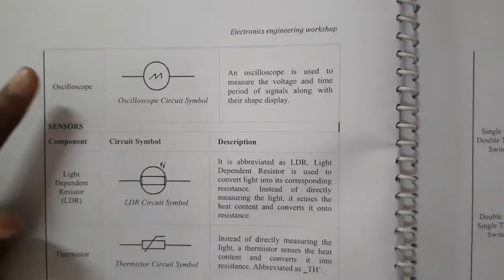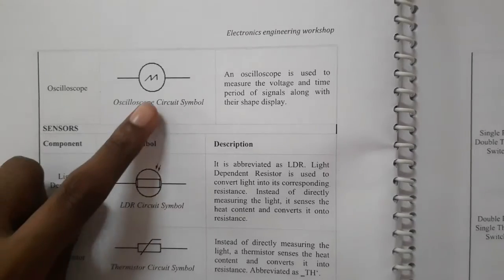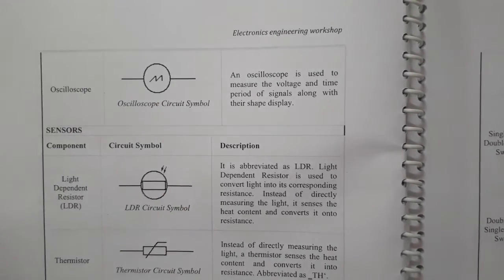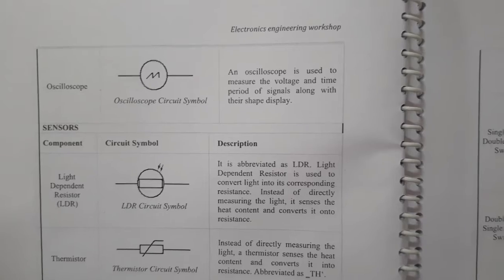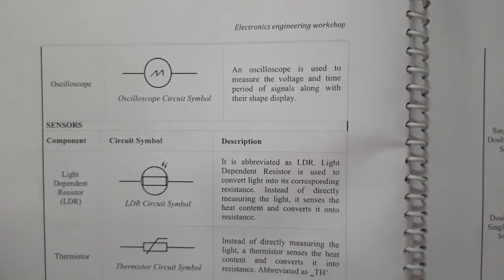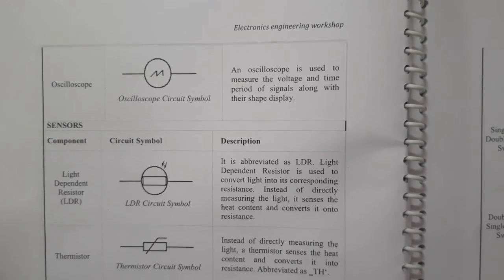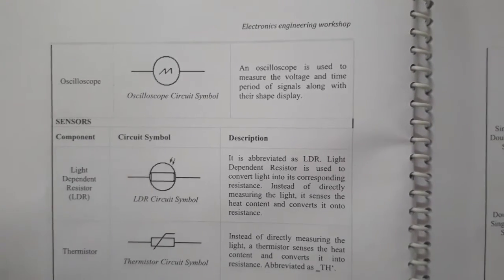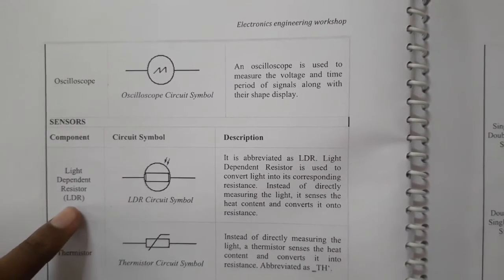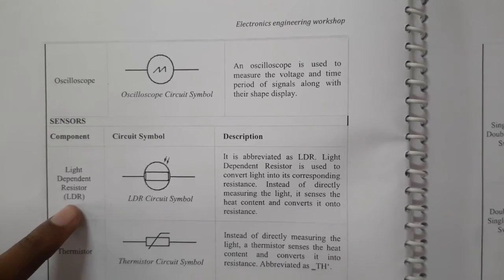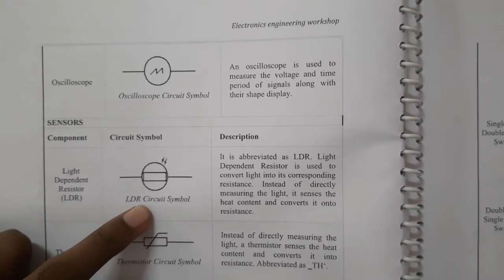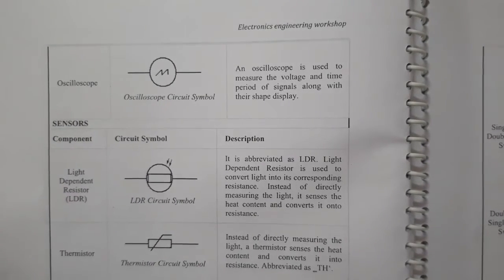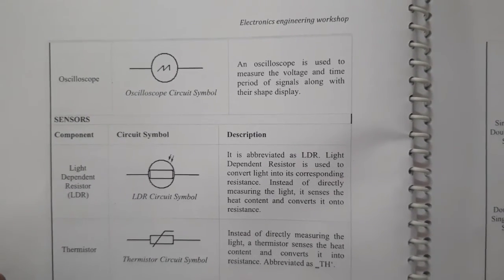Next is the oscilloscope — this is the symbol. It is used to measure voltage and time period. Next is the LDR (Light Dependent Resistor) — this is the circuit symbol. An LDR converts light into a corresponding electrical signal.